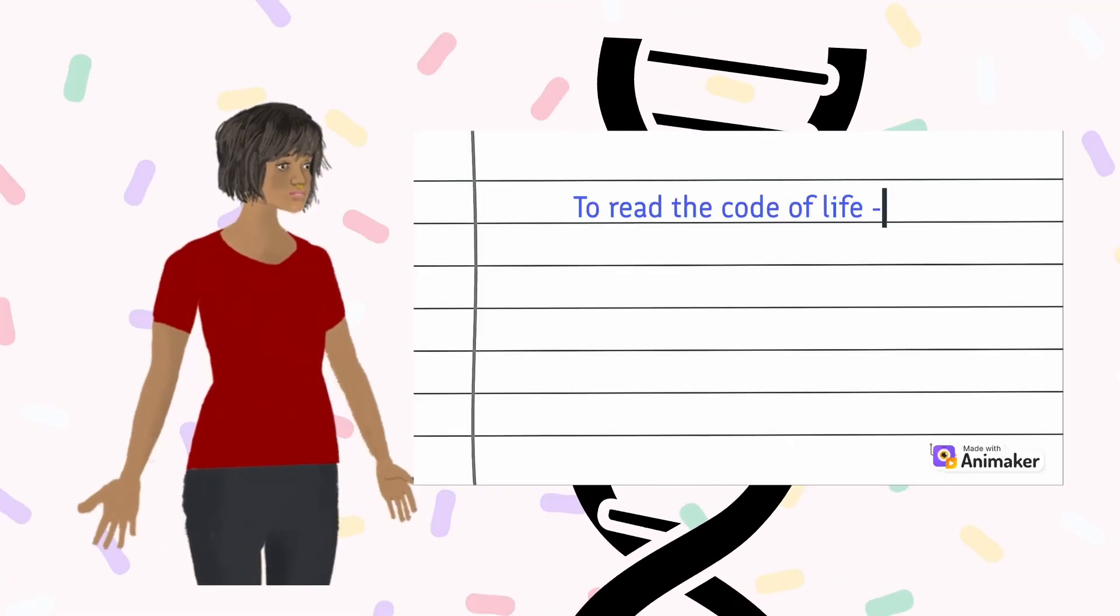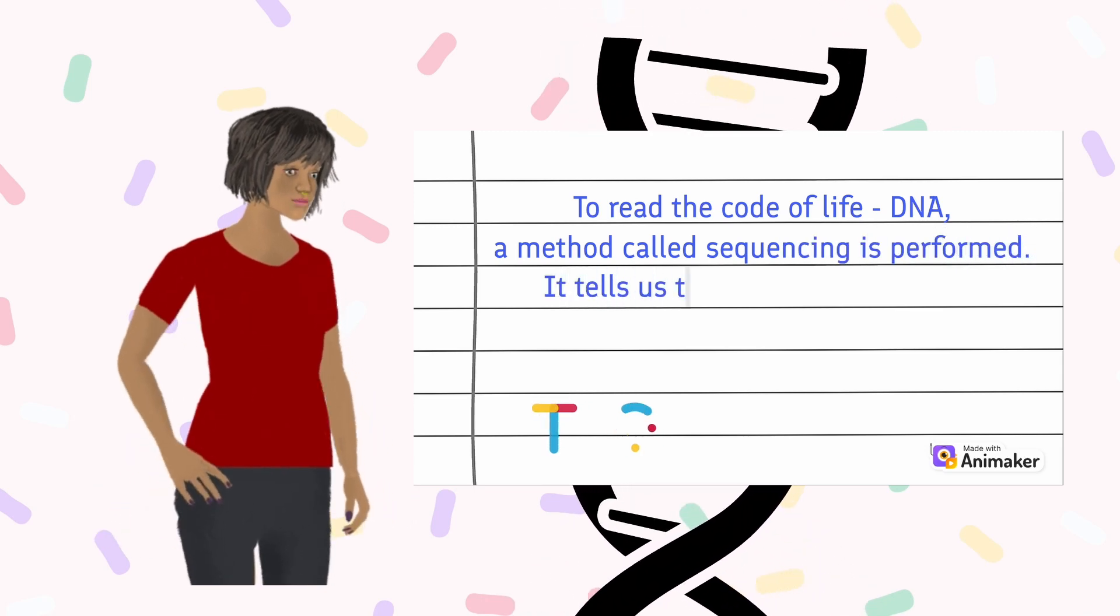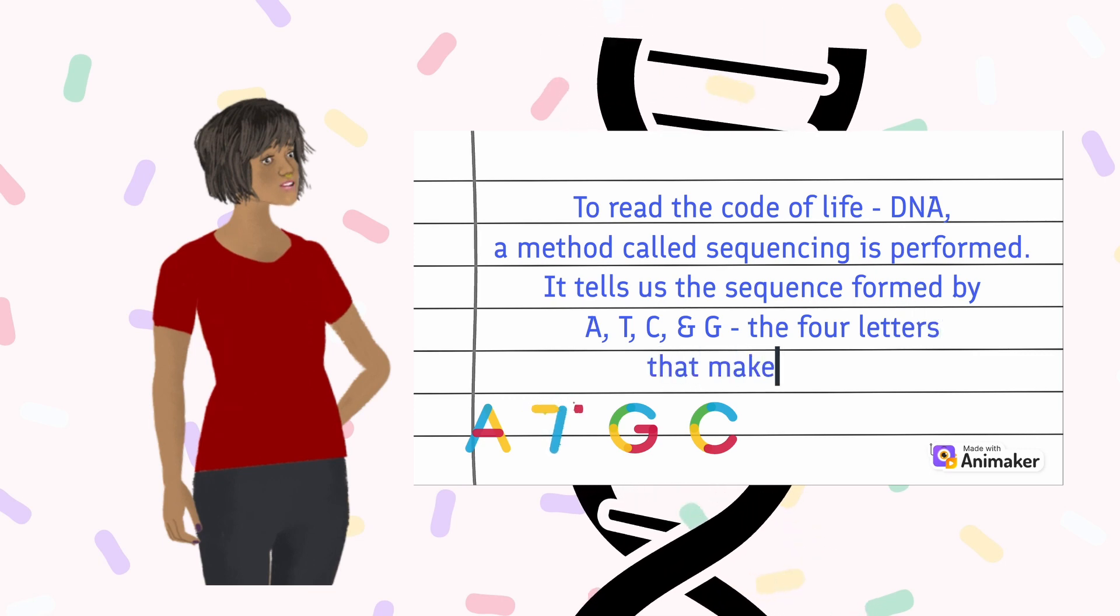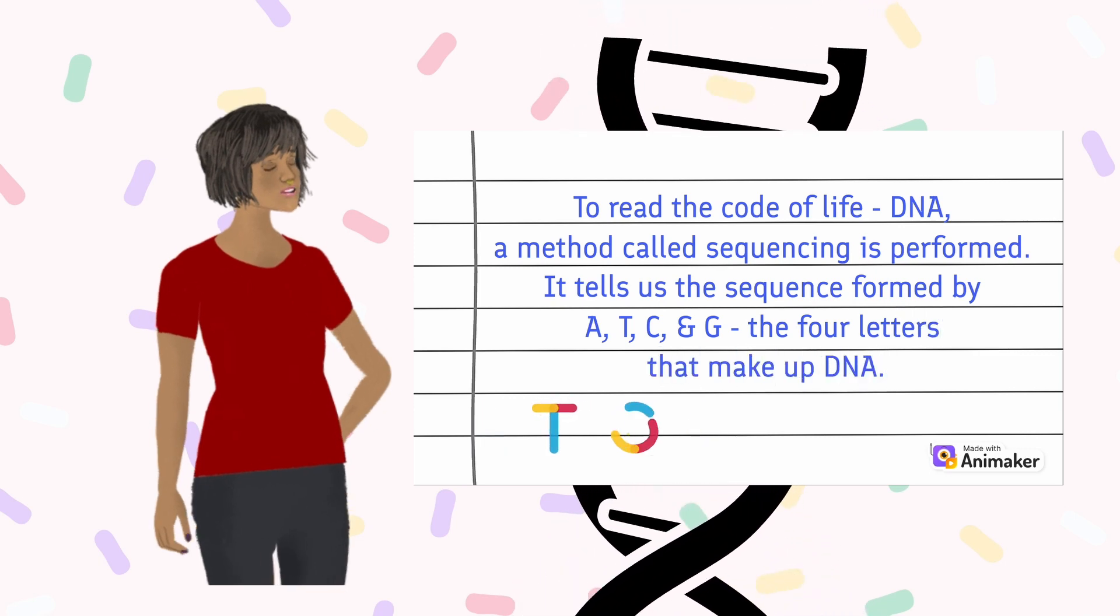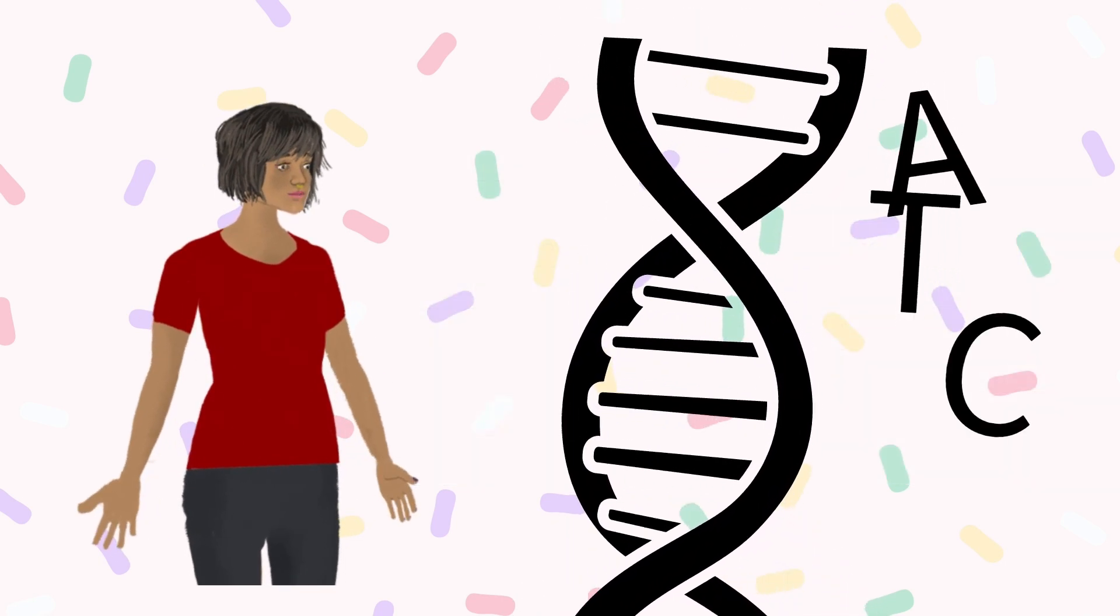To read the code of life, a method called sequencing is performed. It tells us the sequence formed by the four letters that make up DNA, which are A, T, C, and G.